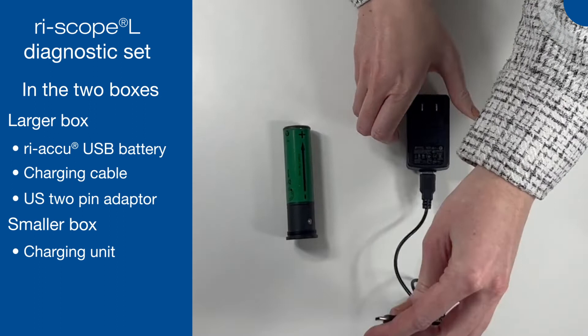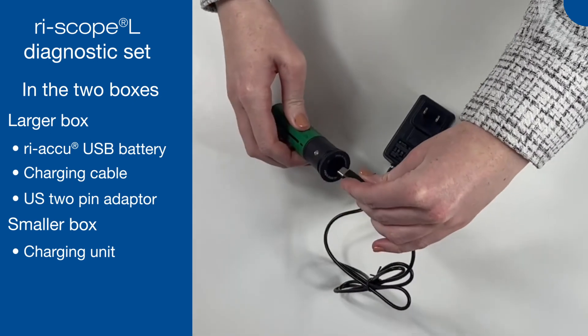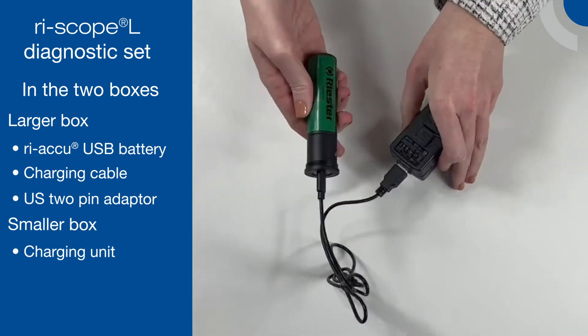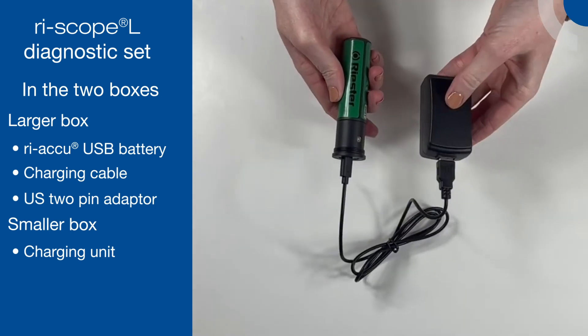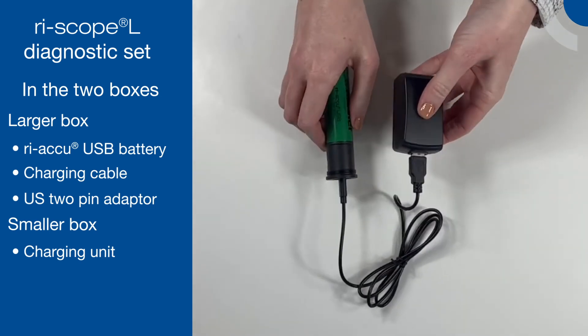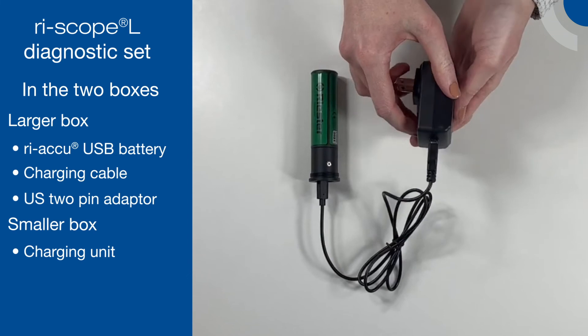Insert the charging cable into the charging unit using the USB end of the cable and insert the smaller USB-C end directly into the battery. Plug the charging unit into an electrical socket to charge the battery.